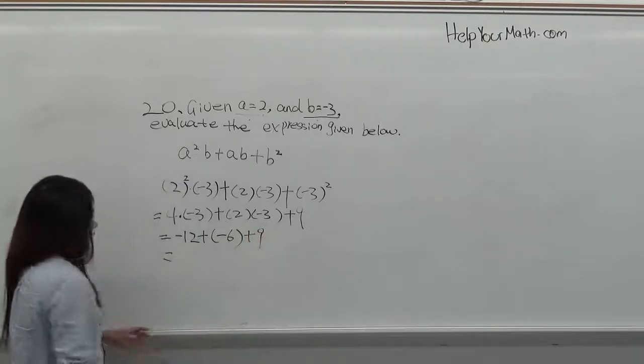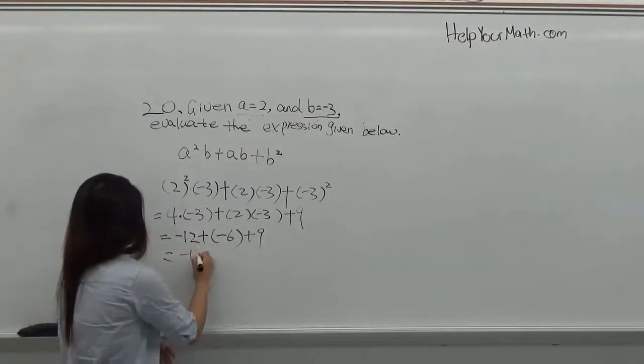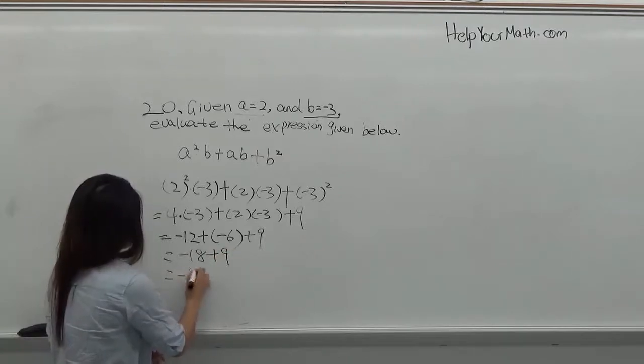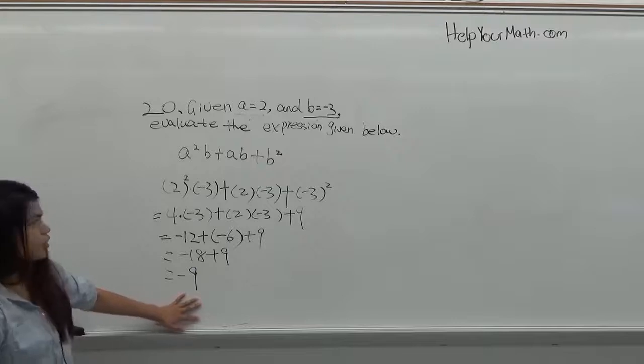Then you can calculate it. Negative 12 plus negative 6 is negative 18, plus 9 equals negative 9. And this is the final answer for the problem. Thank you.